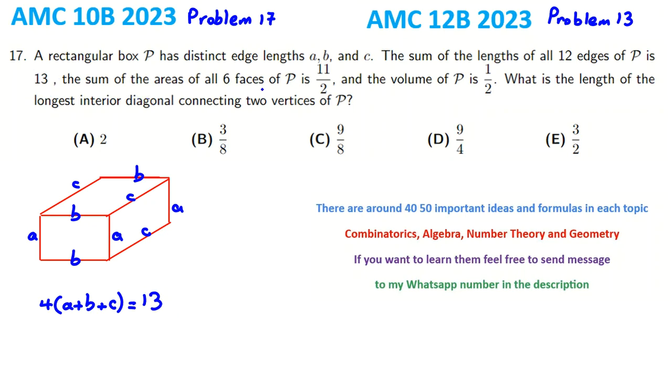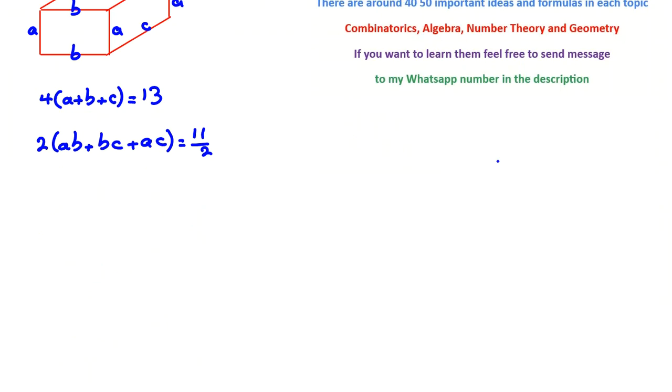The sum of the areas of all six faces is 11/2, so 2(ab + bc + ac) = 11/2. The volume is 1/2, so abc = 1/2.